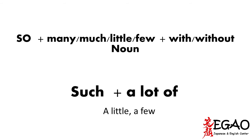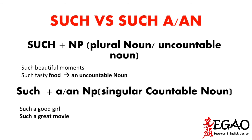Now let's look at how to use 'so' and 'such' with the words many, much, a lot of, little, and few. 'So' can be followed by many, much, and it can be with or without nouns — for instance: 'I love you so much' (without noun) and 'I have so much money' (with noun). 'Such' is followed by 'a lot of,' 'a little,' and 'few,' and it is always followed by a noun.